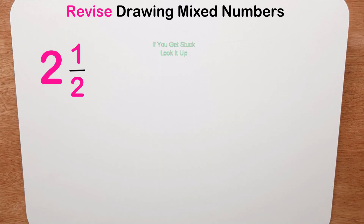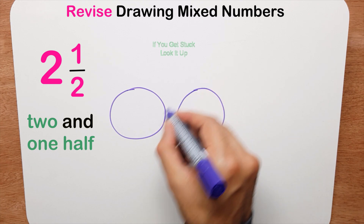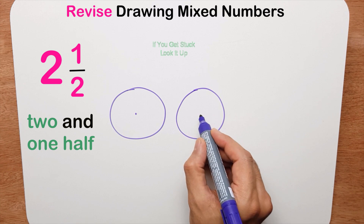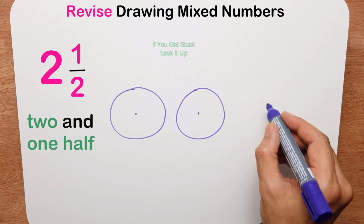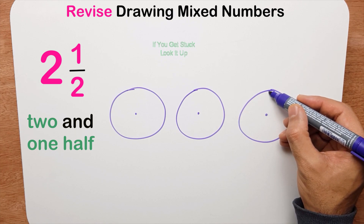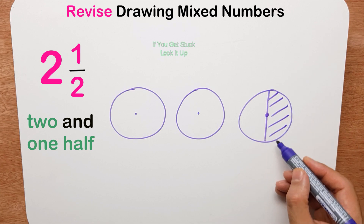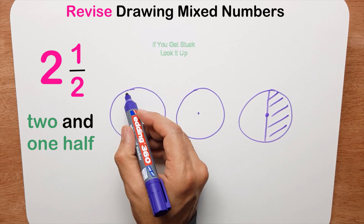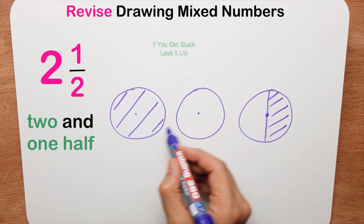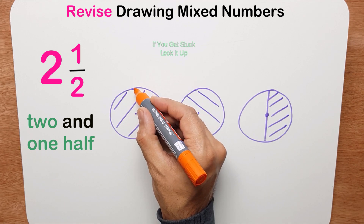My third mixed number is two and one half, or two and a half. So let me draw two whole pizzas — one, two — there are the centers. Now I need to draw half a pizza, so I'm going to get a full pizza and halve it. I only want one piece so I'll shade that in, and I'm going to shade both of the whole pizzas in as well. As before, I'm going to cut these two whole pizzas into halves — cut it straight down.